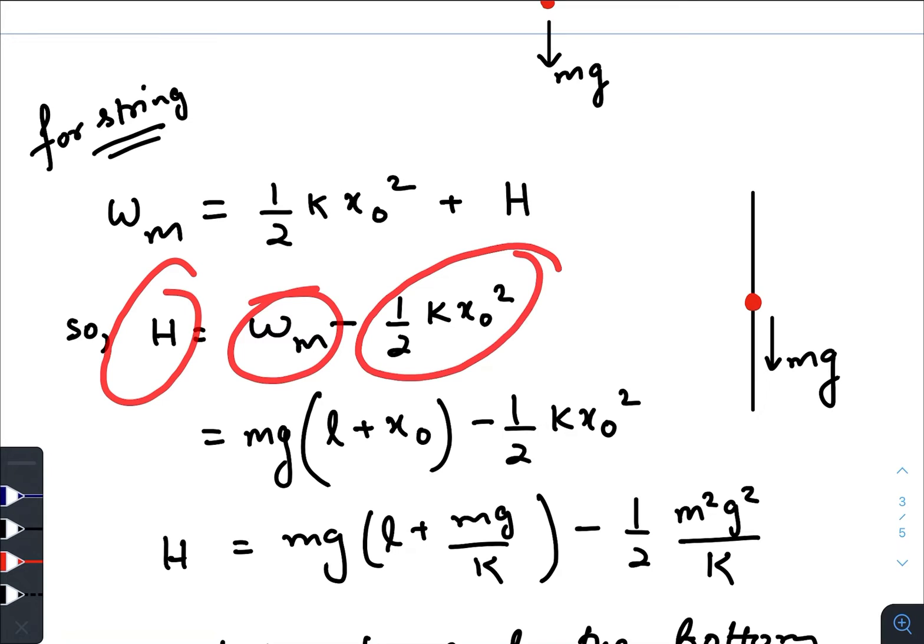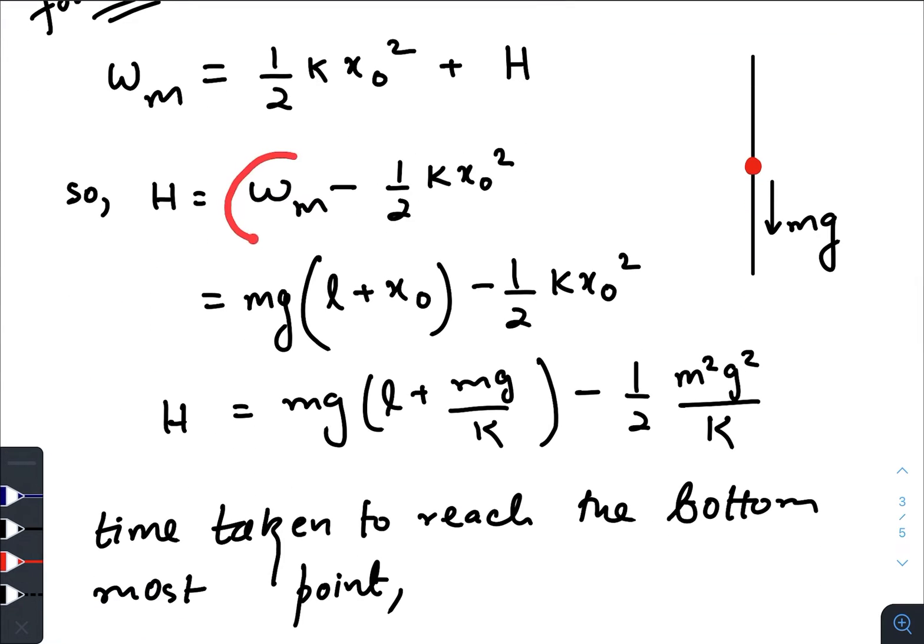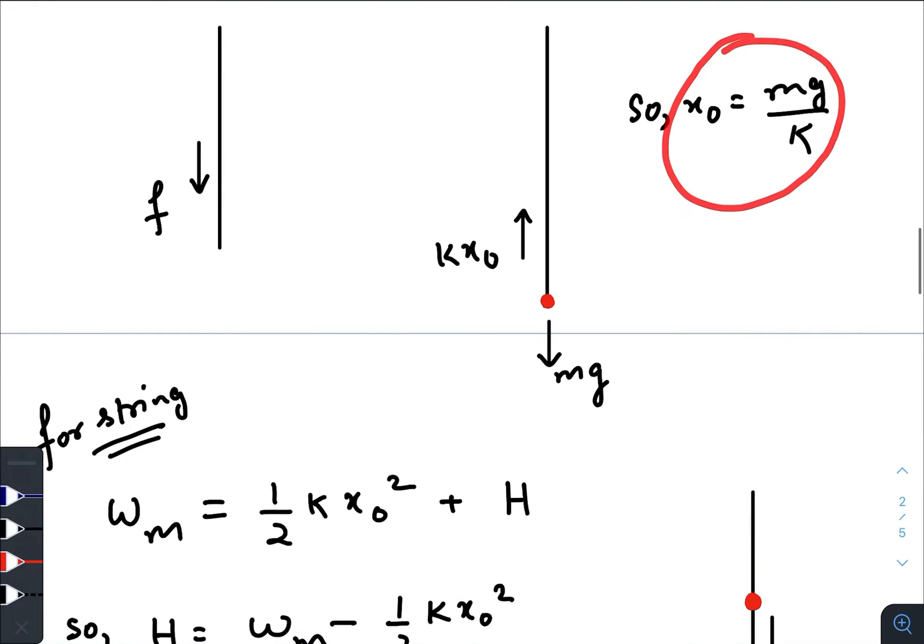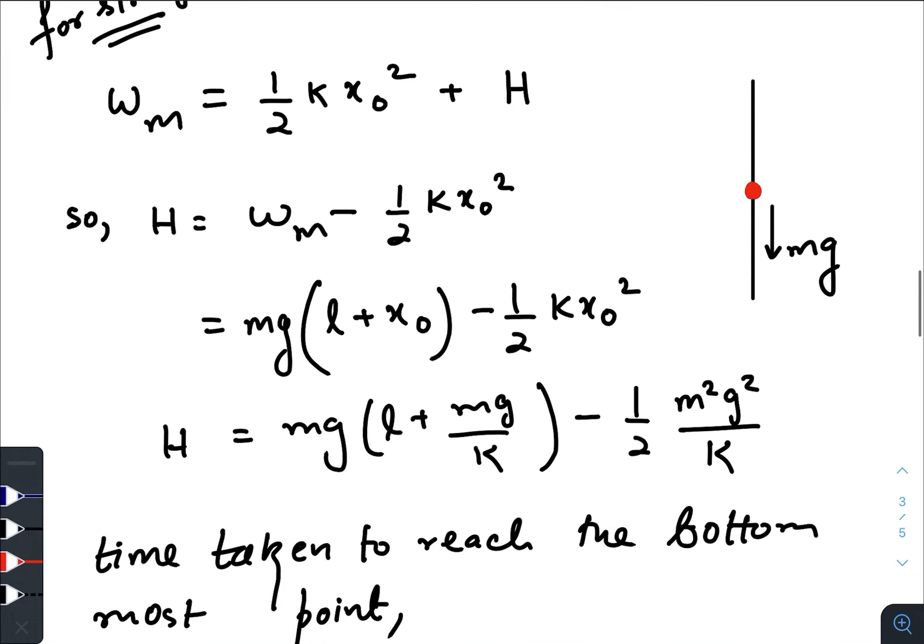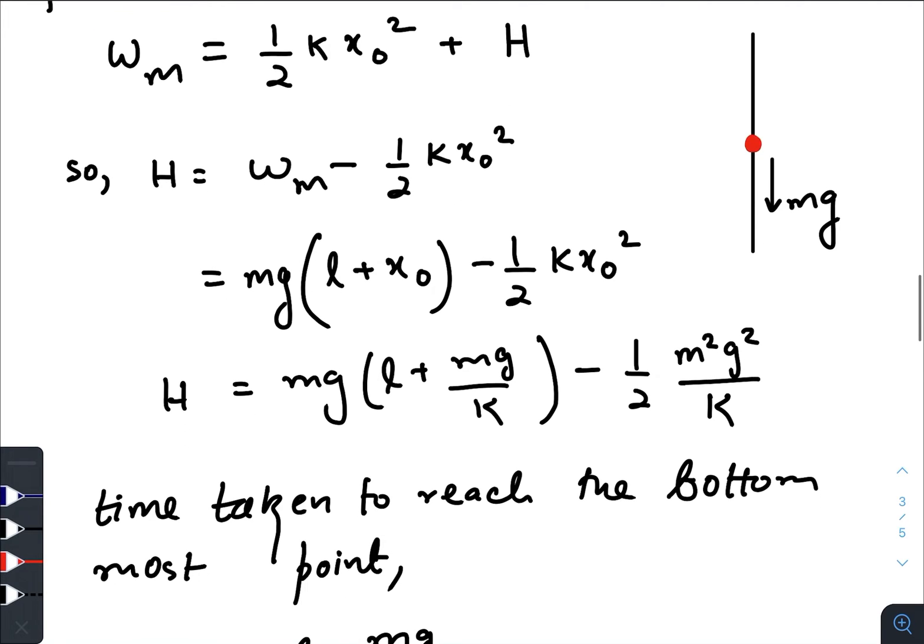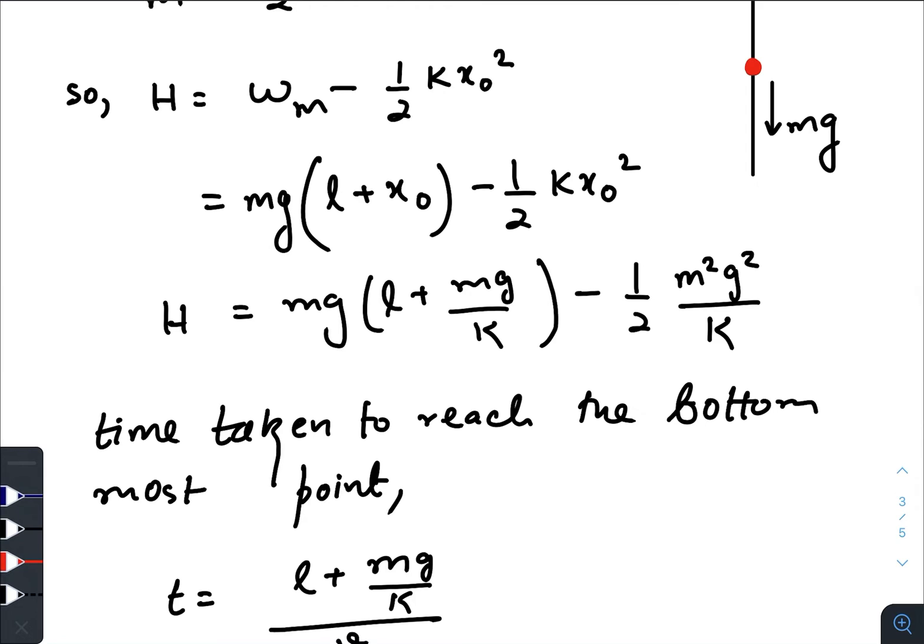Work done by the mass is nothing but the force multiplied by the displacement of the mass. The length of the journey covered by this mass is the initial length of the string plus this extra X naught. So work done by the mass is MG into L plus X naught, and half K X naught squared is the final potential energy that has been stored in the string just at the end of the journey. If we calculate this, we will just put the value of X naught here, so the heat loss in the whole journey is H.